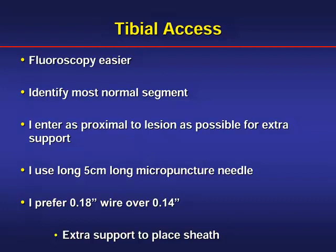For tibial access, we typically use fluoroscopy because the tibial vessels are deep in the calf muscles. We use the long micropuncture needle — seven centimeters — to be able to reach. We invariably use an .018 long support wire, typically the Platinum Plus or one of the Boston wires, to give support to get the micro support catheter over the .018 wire. I use the .018 support catheter and try not to put sheaths, to minimize the risk of compartment syndrome and hemostasis concerns.